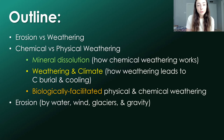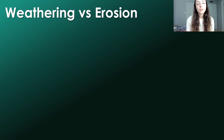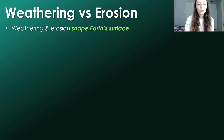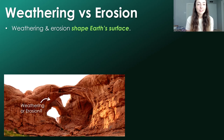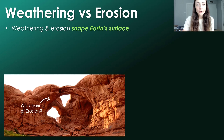Then we'll talk about erosion, which can occur by water, wind, gravity, and glaciers — which I guess also counts as water. Weathering and erosion work together to shape the kind of morphology, the shapes and structures of Earth's surface. And by the end of this video, you'll be able to answer the question of whether this rock arc in this picture was caused by erosion or weathering — or both. Both is an option.